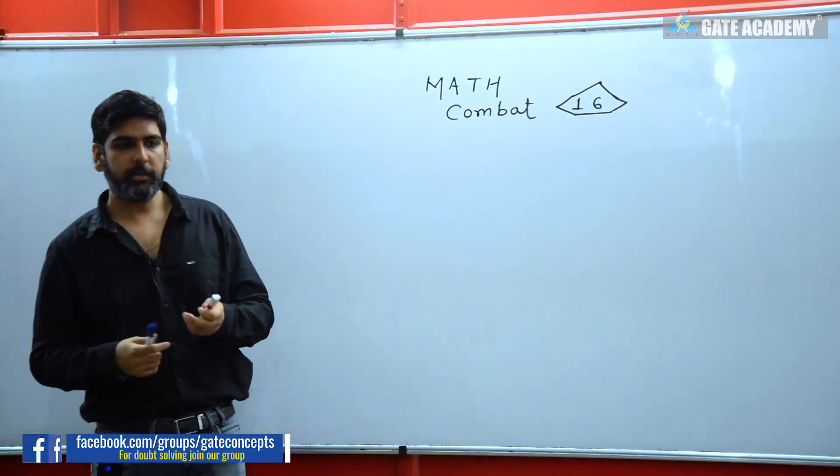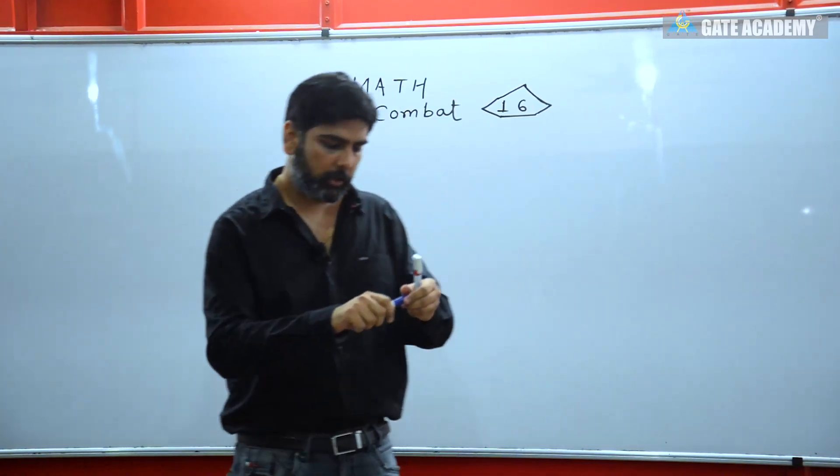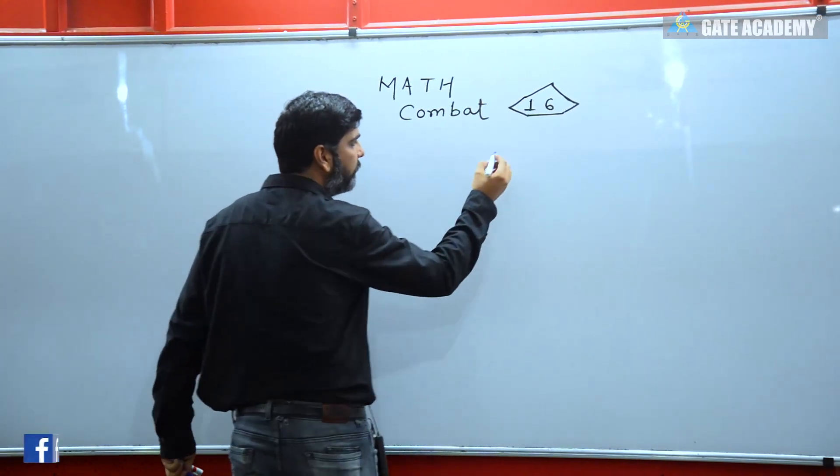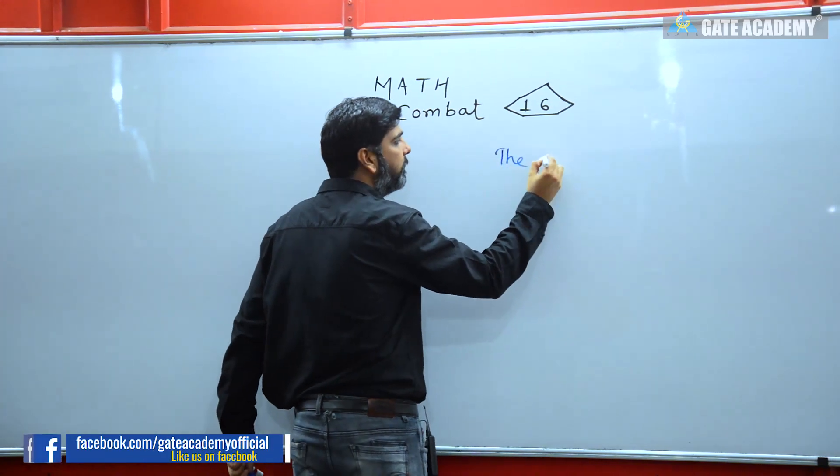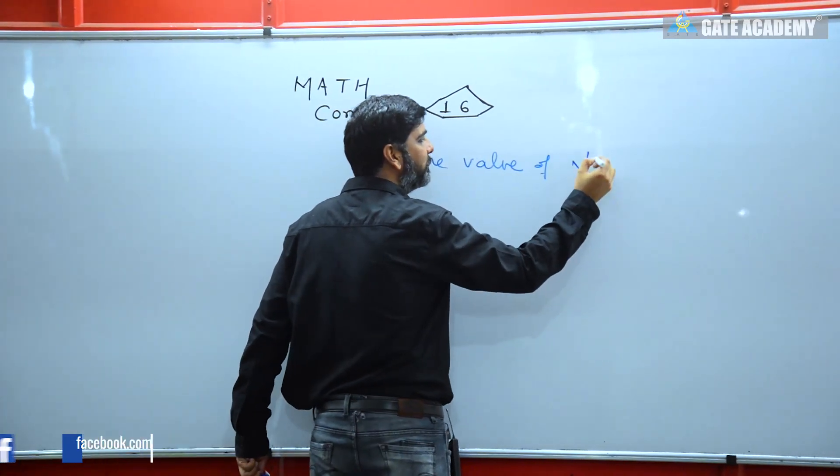I have a Numerical Methods question to solve using iteration. I am giving you a direct question: the value of under root 12.